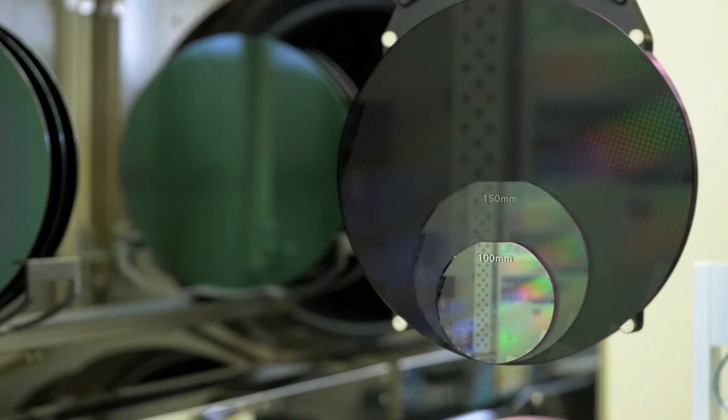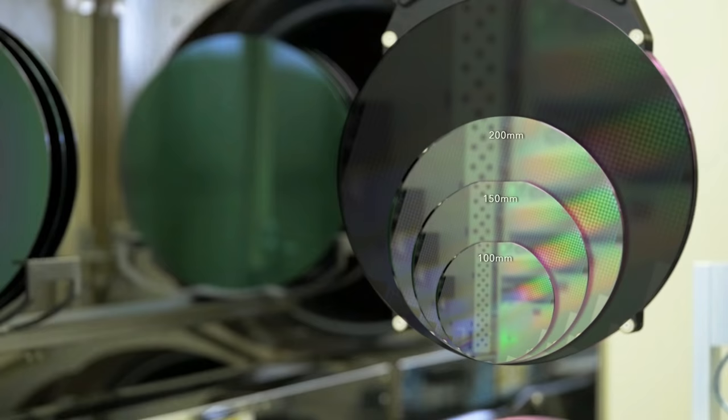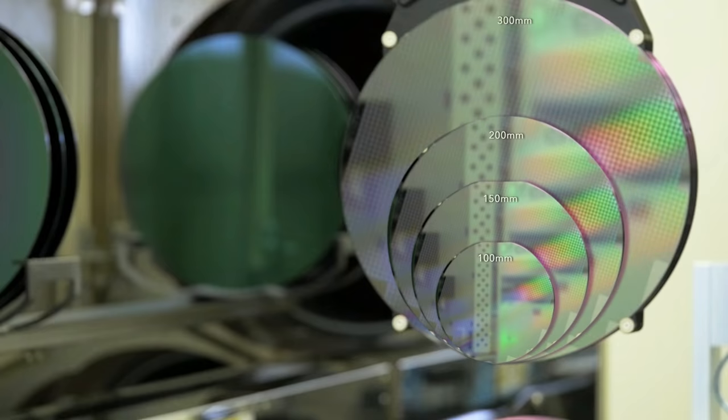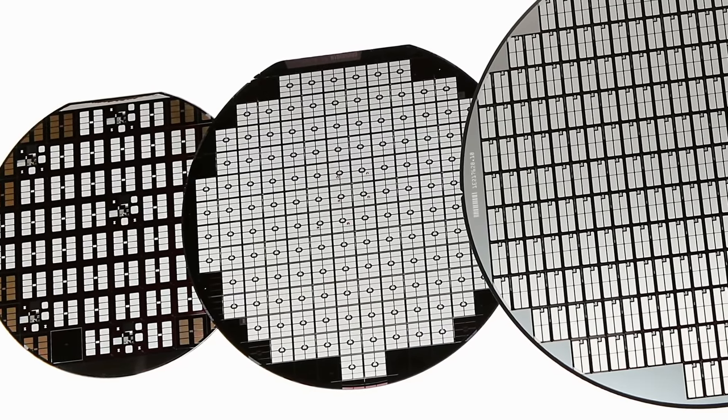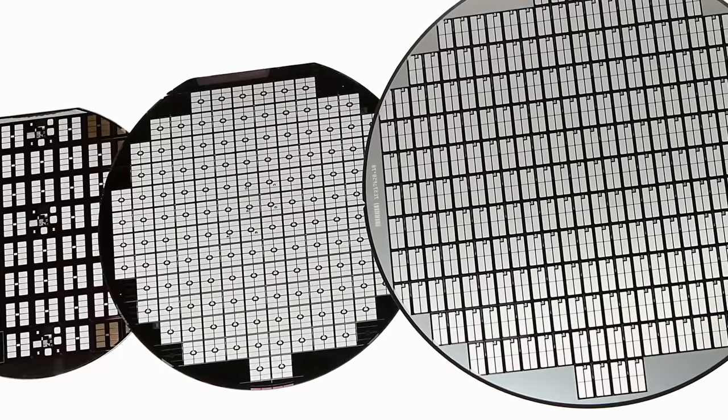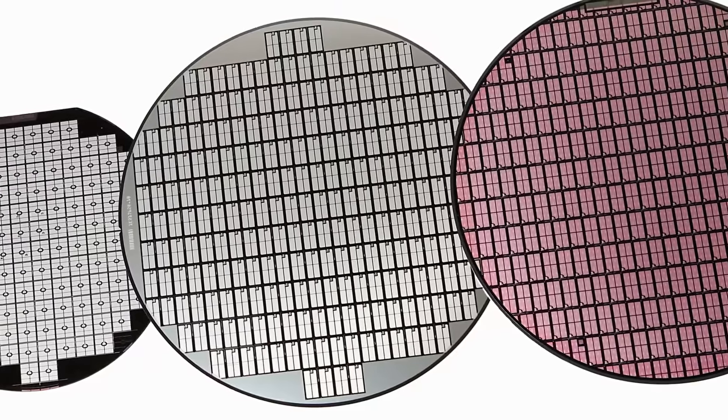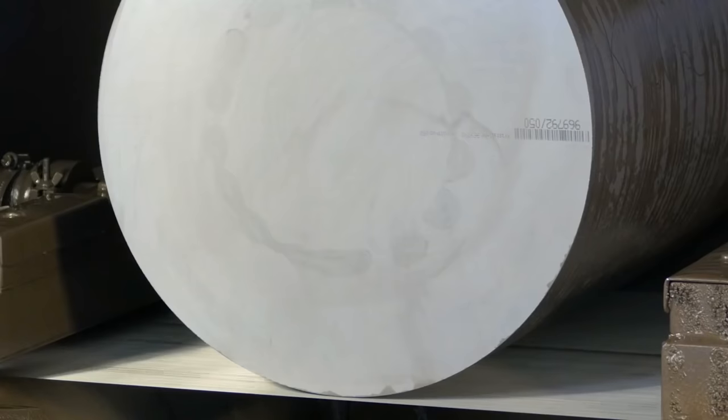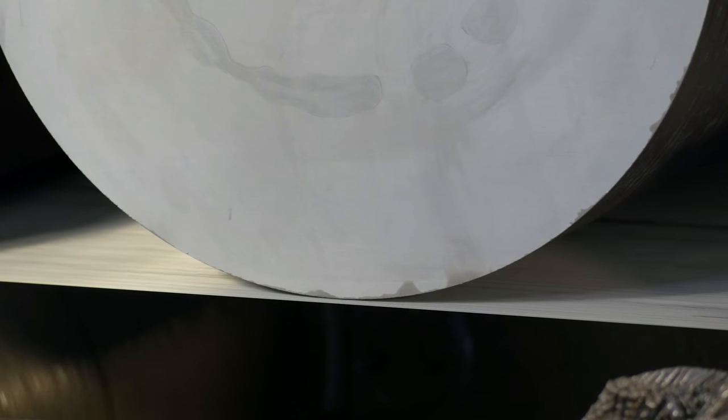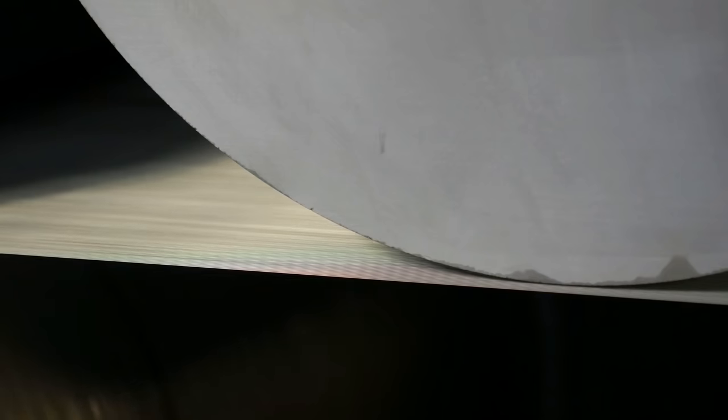Silicon boules are fabricated in a range of different diameters. The most common sizes are 150, 200 and 300 mm. Wafers with large diameters offer more space for chips. Extremely thin wafers are then cut from the silicon boules using a special sawing technique. These wafers are the basic building blocks for subsequent chip production.